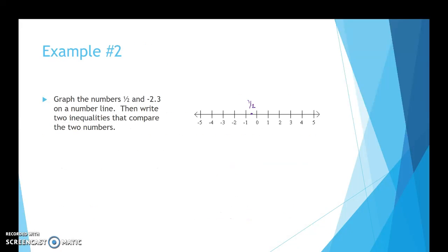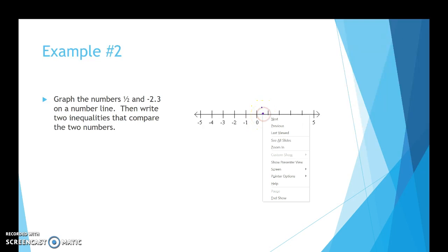In example 2, we're working with graphing numbers on a number line. They want us to graph one-half and negative 2.3, then write two inequalities comparing the two numbers. First, let's graph one-half on the number line — that's going to be between 0 and 1, directly in the center. I can label this one-half.